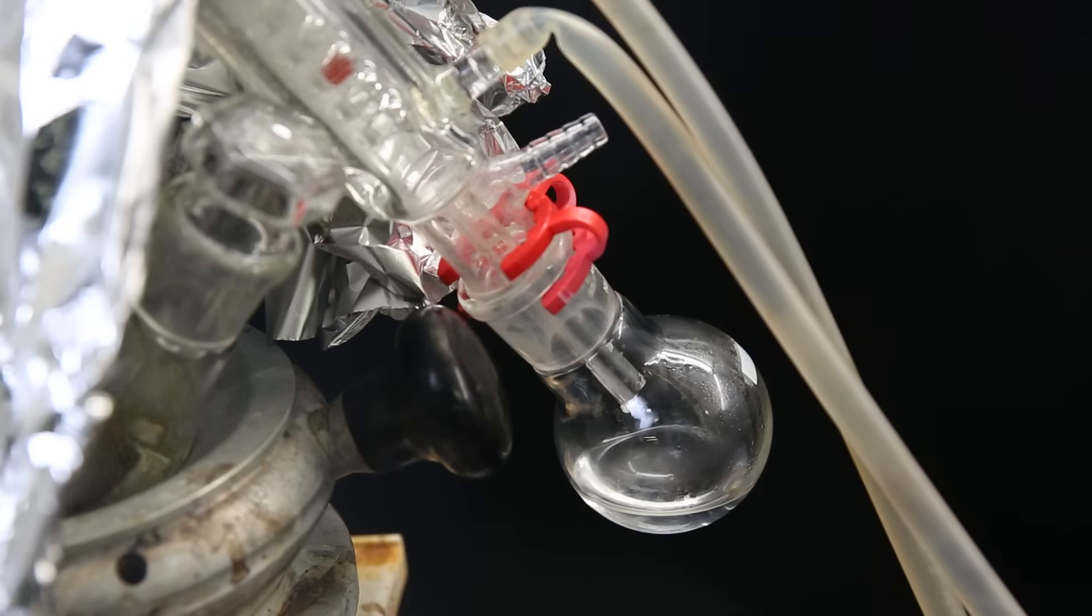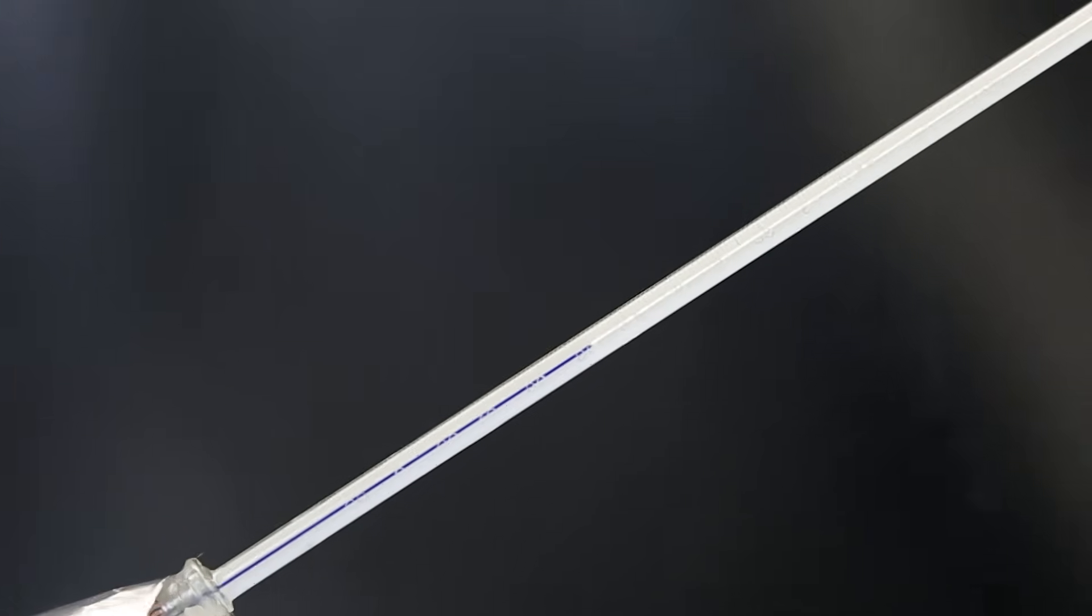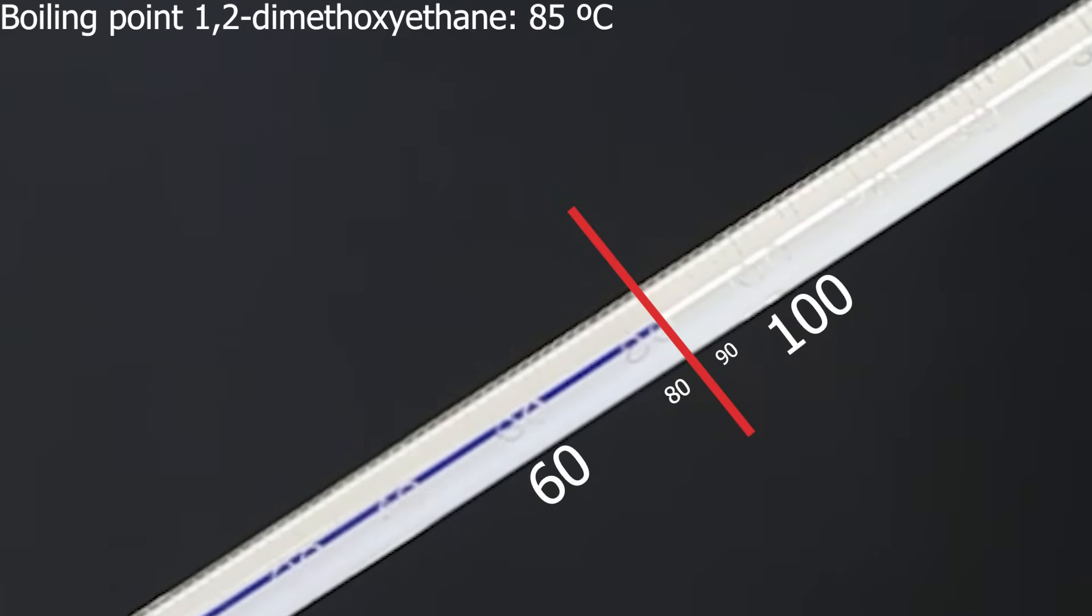After a while, some white vapors are visible in the apparatus, and the temperature in the head starts increasing to 85 C, which means that 1,2-dimethoxyethane is coming over. So at this point, I can stop the distillation.